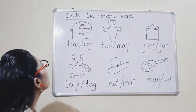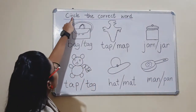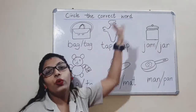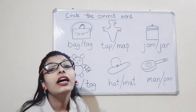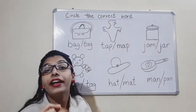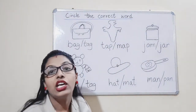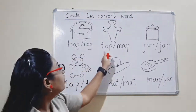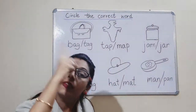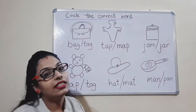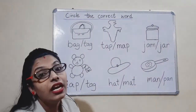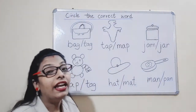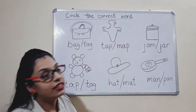Read the question: Circle the correct word. Circle the correct — correct means sahih. Sahih word ko hume circle karna hai. So we will see the picture, identify the spelling, and circle it.